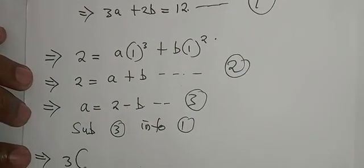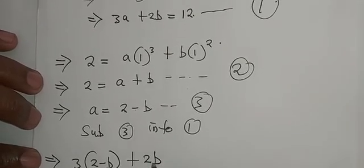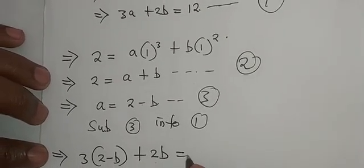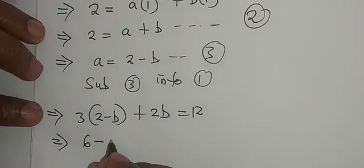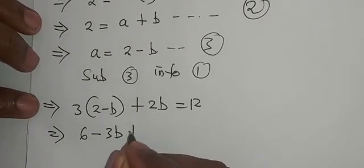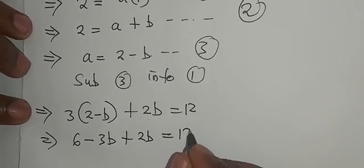Therefore, it will be 3 times (2 minus b) plus 2b equals 12, which means 6 minus 3b plus 2b equals 12.